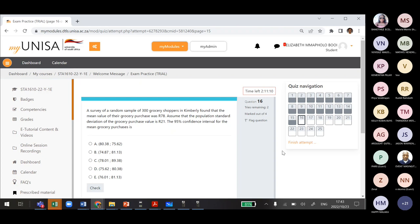We are now on question 16. A survey of a random sample of 300 grocery shoppers in Kimberley found that the mean value of their grocery purchase was R78, assume that the population standard deviation of the grocery purchase is R21.